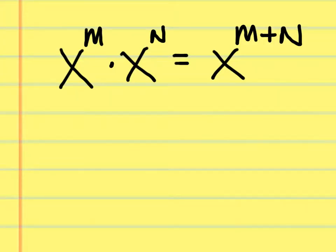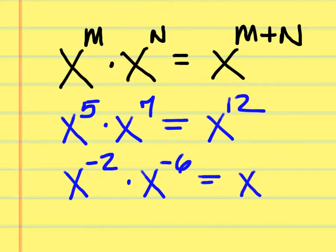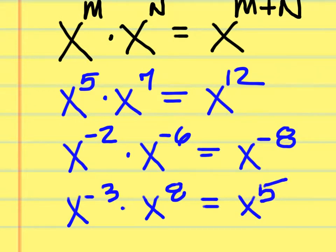Rule 1: when you're multiplying two items together that have the same base, you add the exponents. For example, x to the m times x to the n equals x to the m plus n. So x to the fifth times x to the seventh equals x to the twelfth. If you had x to the negative 2 times x to the negative 6, that would be x to the negative 8. And x to the negative 3 times x to the 8th is x to the fifth.